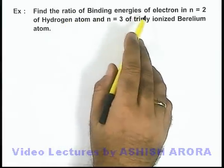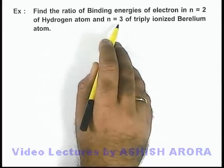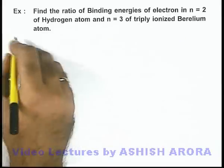In this example, we are required to find the ratio of binding energies of electron in n = 2 of hydrogen atom and n = 3 of triply ionized beryllium atom.